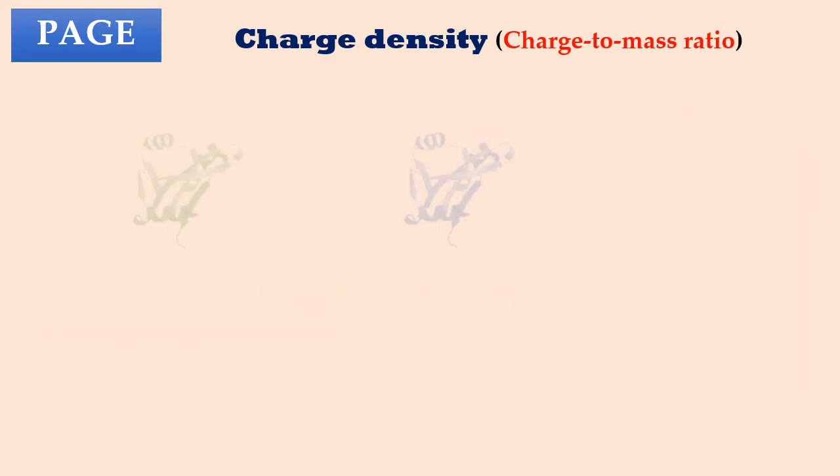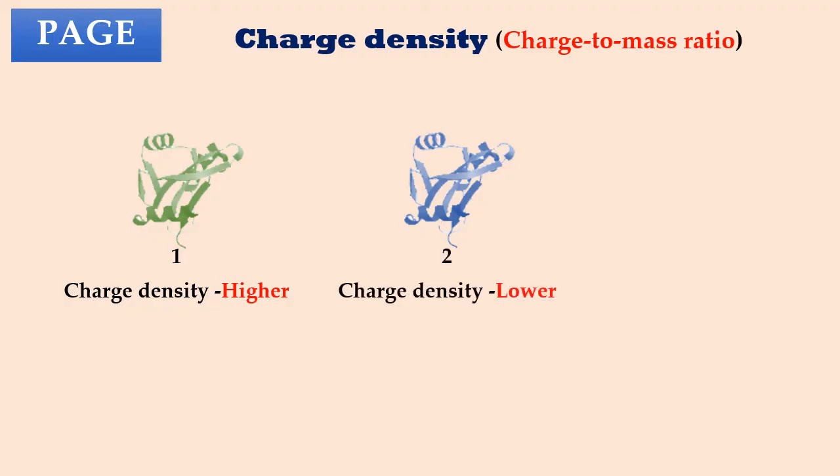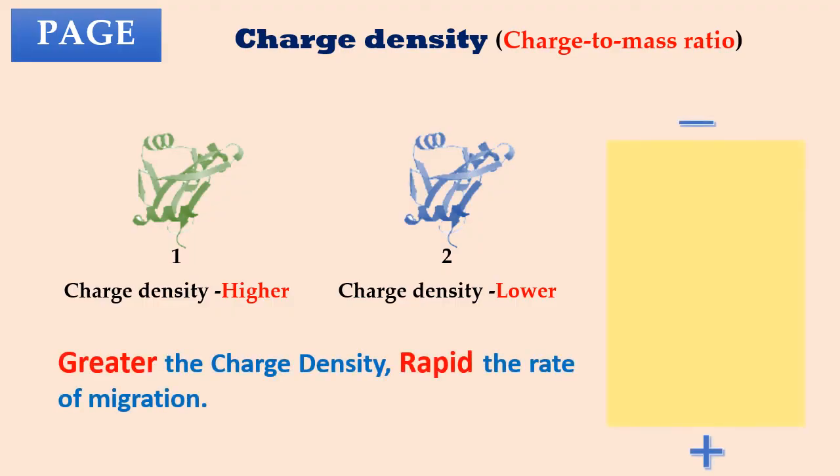Suppose there are two protein molecules in a given sample. The first one has higher charge density, and the second one has lower charge density as compared to the first. The protein molecule with greater charge to mass ratio or charge density migrates faster in the gel.